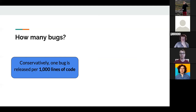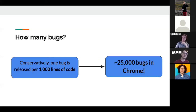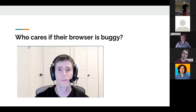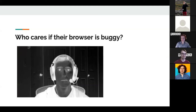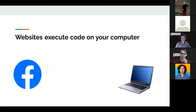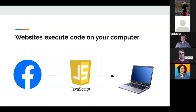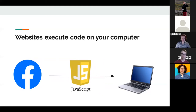One important thing is that with this many lines of code, conservative estimates say about one bug exists for every 1,000 lines of code. Applied to Chrome, that means there are roughly 25,000 bugs in Chrome that we just don't know about. You might think: who cares if there are bugs in my browser? Like if the picture gets messed up on YouTube, who cares?